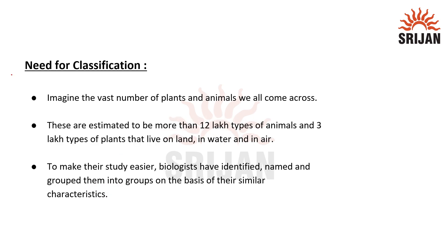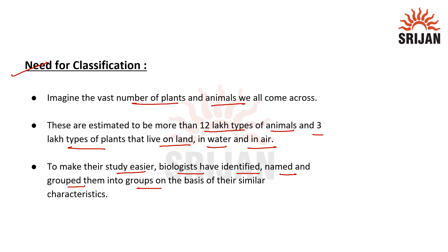Let's understand the need for classification. We have a vast number of plant and animal species. There are estimated to be more than 12 lakh types of animals and 3 lakh types of plants that live on land, in water, and in air. To make the study easier, biologists have identified, named, and grouped them on the basis of their similarities and differences, and hence the system of classification was formed.